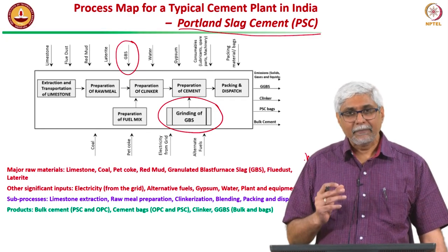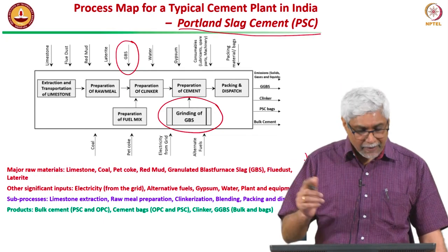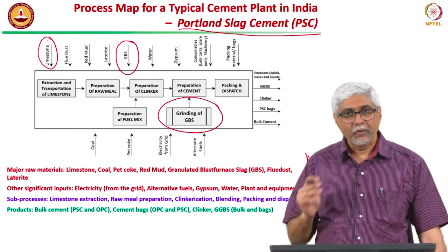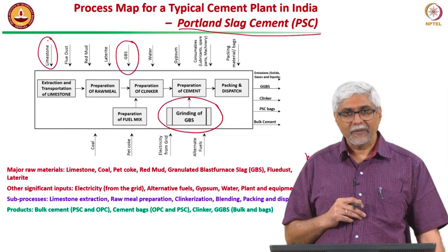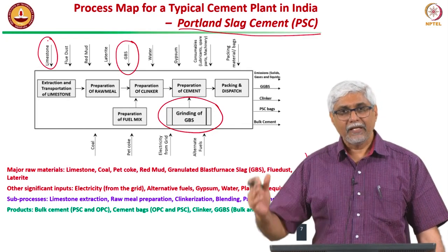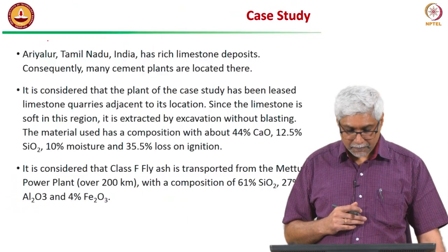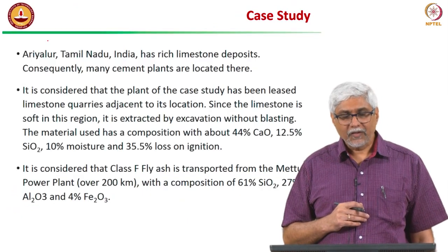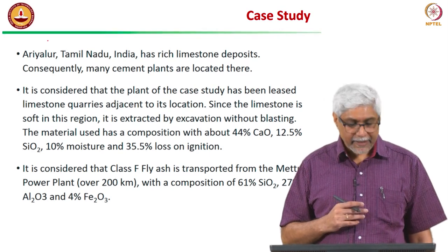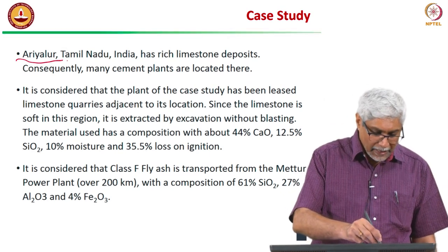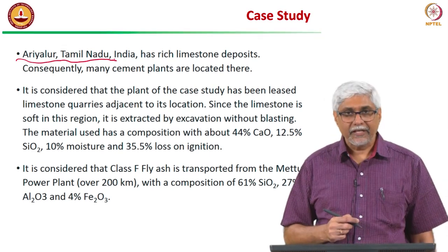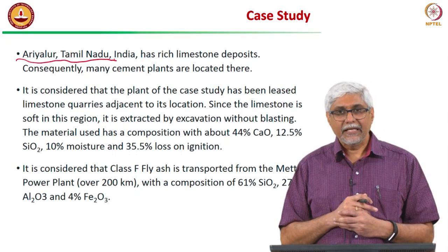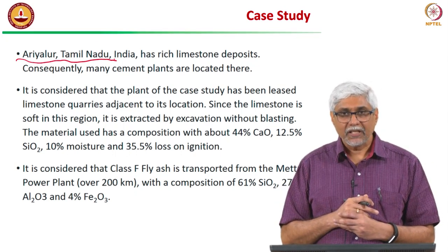First we create the process map, then we determine the quantity for the functional unit of 1 tonne of cement, and finally we do the conversion. The case study plant is located in Aryalur in the state of Tamil Nadu in the south of India, which has many cement plants due to its rich limestone deposits.